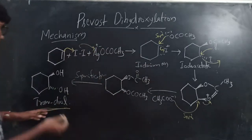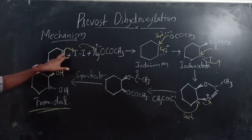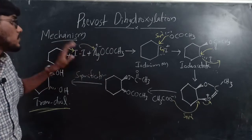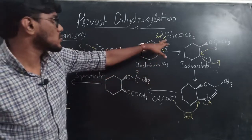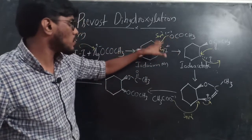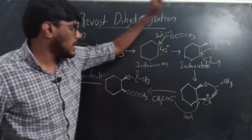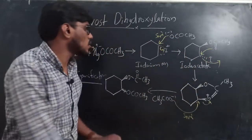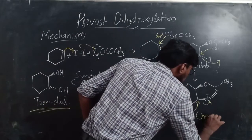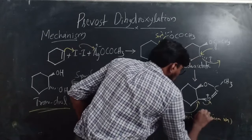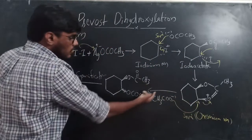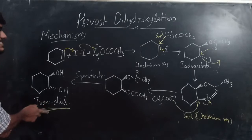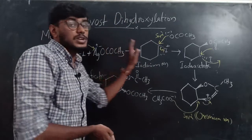In summary, the mechanism of the Prevost dihydroxylation reaction is: the alkene reacts with iodine in CCl4 and silver acetate to give an iodonium ion. To this iodonium ion, the acetate ion attacks through the backside to form an iodoacetate. In the iodoacetate, neighboring group participation forms an oxonium ion. Another acetate ion attacks through the backside of the oxonium ion, giving the diacetate, which on saponification yields a trans-diol.